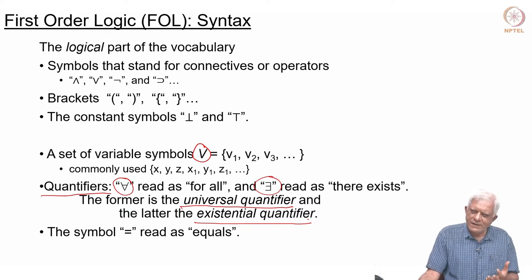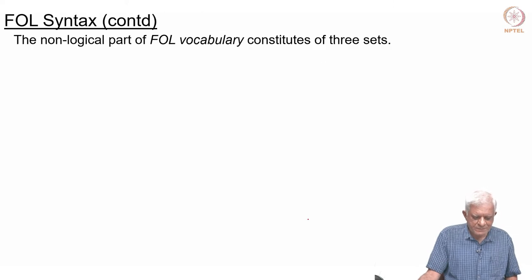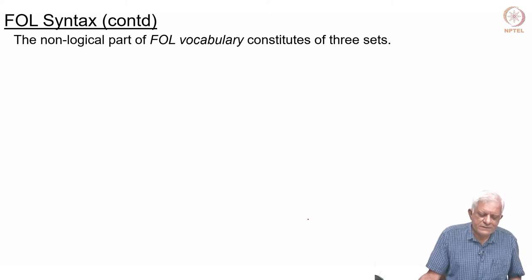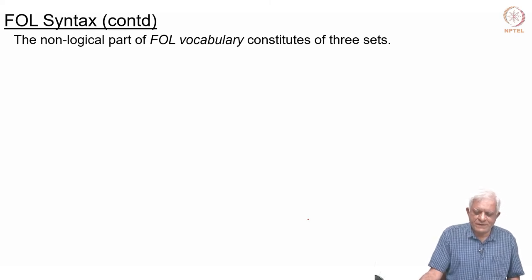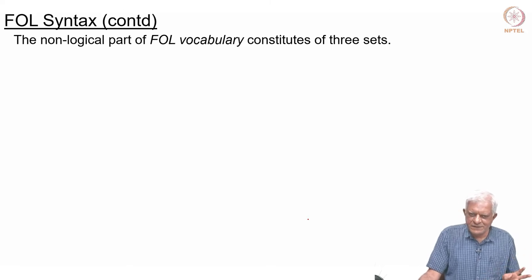So sometimes we say we have first order logic, and sometimes we say we have first order logic with equality, which means we have added this extra symbol along with the properties of that symbol. Then, as we said earlier, for every logic we have to have a non-logical part or the domain-specific part, and in first order logic the vocabulary for the domain-specific part constitutes three sets.